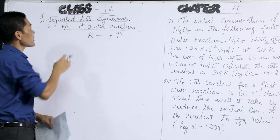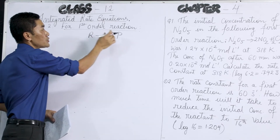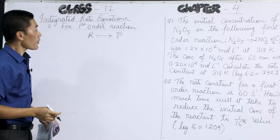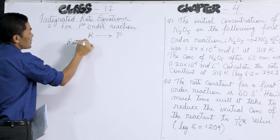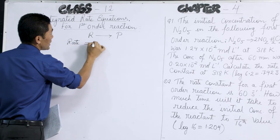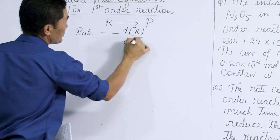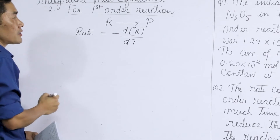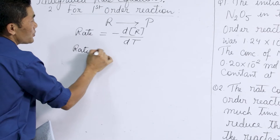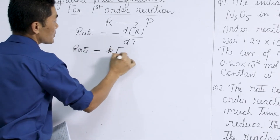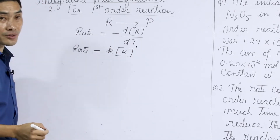To obtain the integrated rate equation, we consider a general reaction in which a reactant R turns into product P. According to our definition, rate can be written as the change in concentration of the reactant by change in time. If we write the rate equation for this reaction, then rate will be equal to the rate constant k into concentration of the reactant R raised to power 1, since it is a first order reaction.